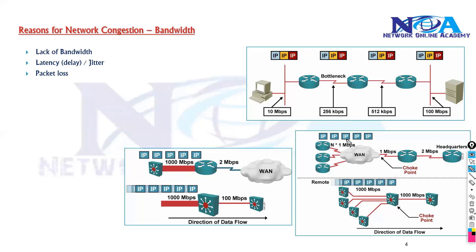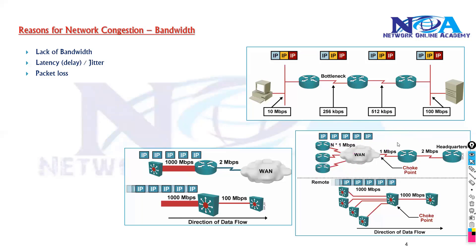Another reason for congestion is the aggregation of links. You receive traffic from multiple interfaces and then try to send it over one common interface. For example, your head office may be receiving traffic from multiple branch offices and trying to route it to the next branch office. That can also lead to congestion.